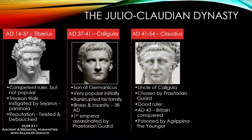The Praetorians assumed he was easy to manipulate, but it turns out Claudius was actually a very intelligent individual and was a very good emperor. Under his leadership, Rome expands further — he conquers Britain, for the most part, in 43 AD. Unfortunately he meets a premature death because he too is assassinated, this time by his wife. He's poisoned by Agrippina the Younger so that her son could succeed early to the throne.